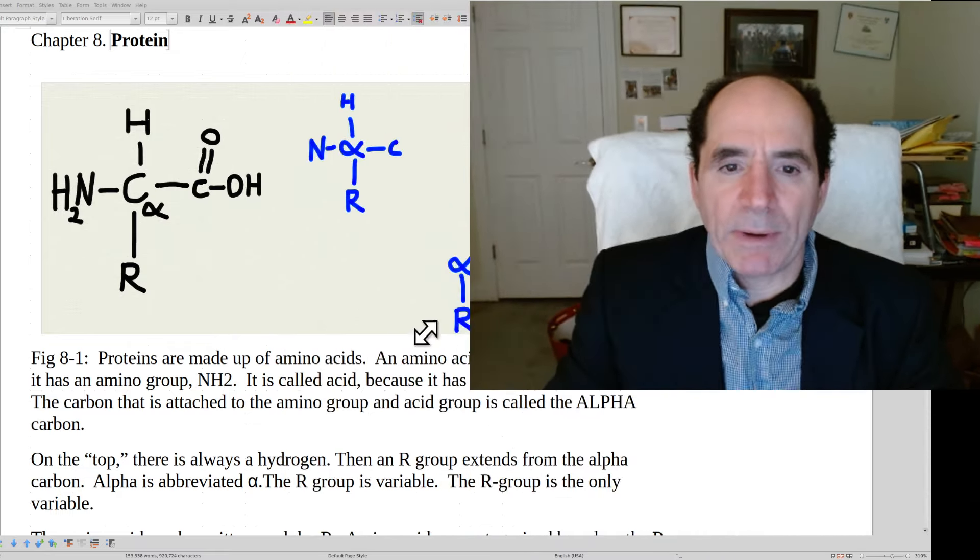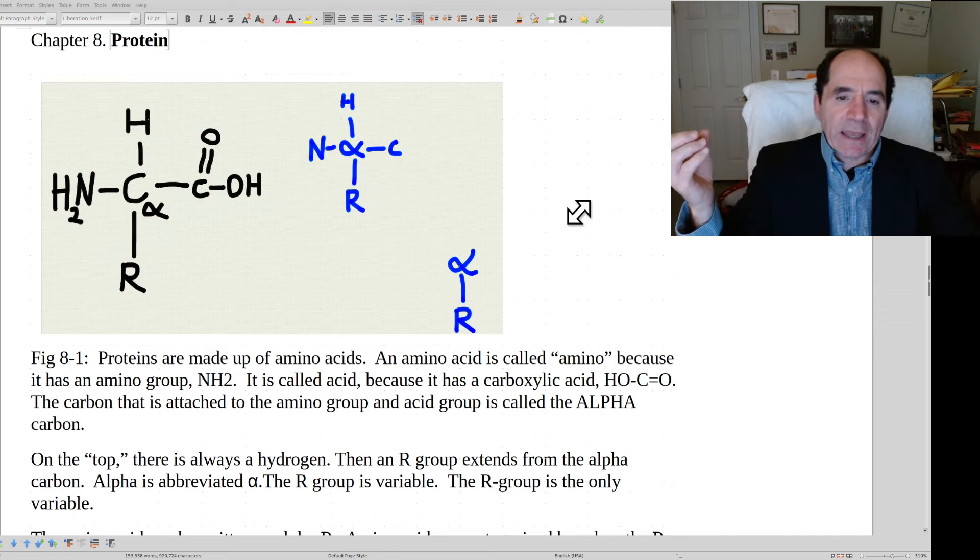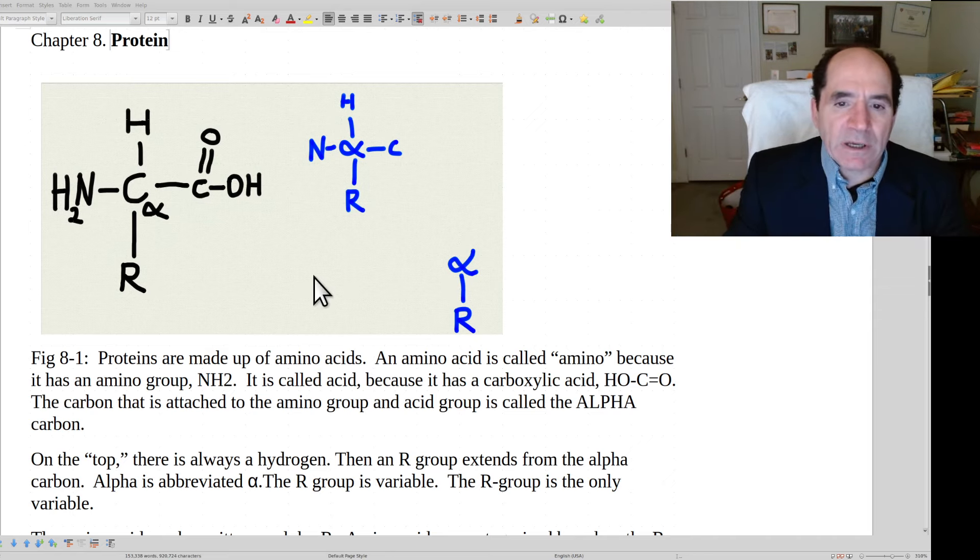So first point about dietary protein is what is a protein? A protein is made out of amino acids. It's basically like a string of beads, like a necklace of all these amino acids connected to each other. The structure of an individual amino acid is right in the center of it, you've got a carbon. And that carbon in the center is called the alpha carbon. And on top of it, you always have a hydrogen.